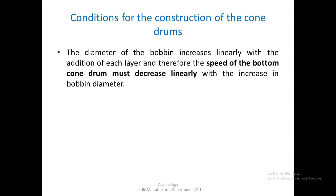So with this, let us see the conditions for the construction of the chondroms. The diameter of the bobbin increases linearly with the addition of each layer, and therefore the speed of the bottom chondrom must decrease linearly with the increase in the bobbin diameter. As the bobbin diameter increases, the bottom chondrom speed must decrease in a linear fashion.